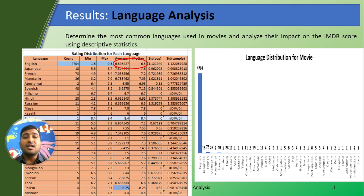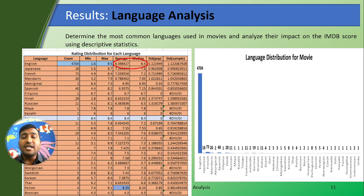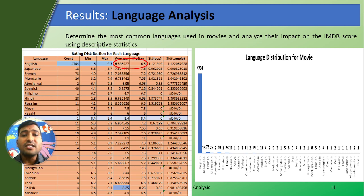Coming to the language analysis, it can be visualized that the English category is more popular, and the English category also follows a normal distribution.